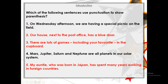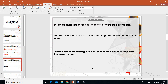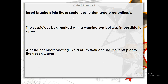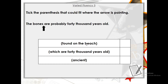Now have a go at this: insert brackets into the sentences to demarcate parenthesis. You're separating your main clause from your relative clause and adding your parenthesis in brackets. For example, 'The suspicious box, marked with a warning symbol, was impossible to open' — where do the brackets go? Pause and have a go. The brackets go around 'marked with a warning symbol', which is the extra information describing the suspicious box. In the second sentence, brackets go around 'her heart beating like a drum', which is extra information about Alina.